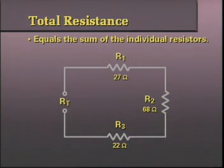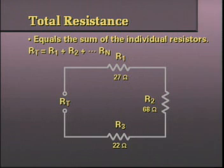The total resistance equals the sum of the individual resistors. This can be written as a formula that says R sub t for total resistance equals the value of R1 plus the value of R2 plus the value of all resistors in the circuit represented by R sub n.